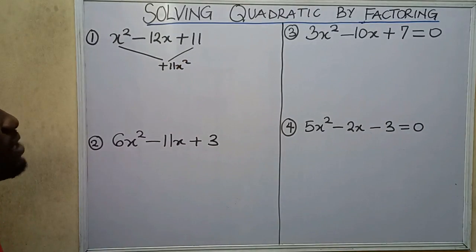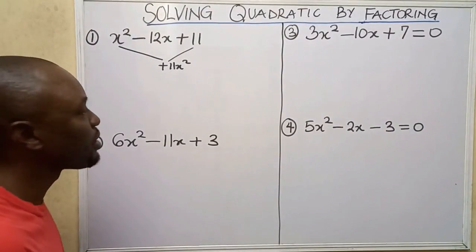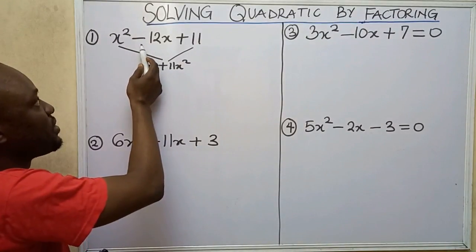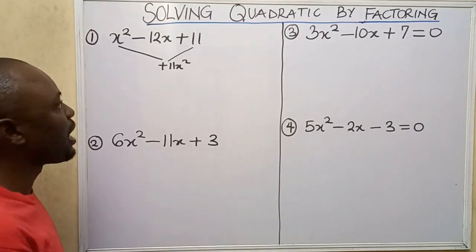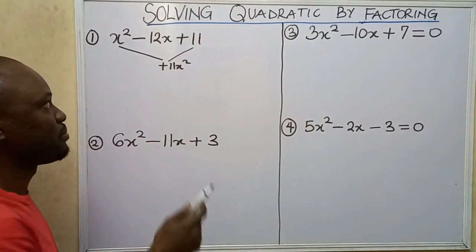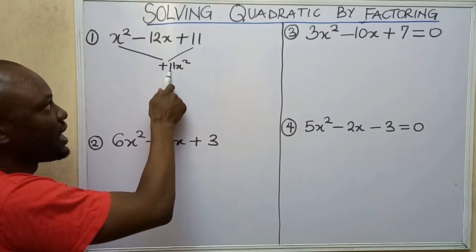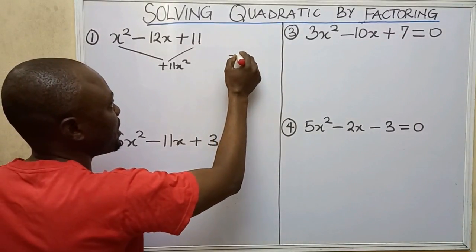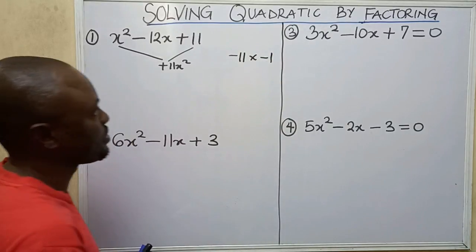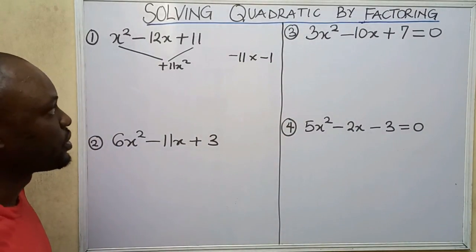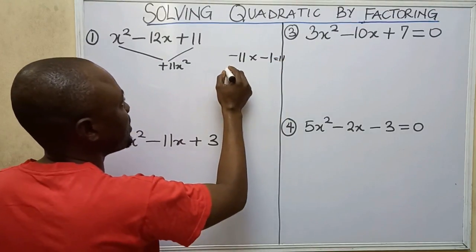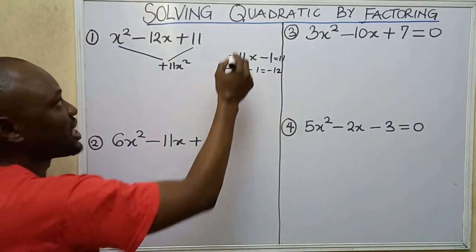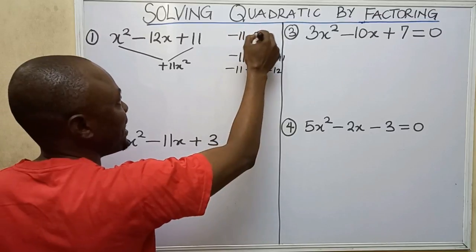The next thing to do is find two factors such that when I multiply those factors I get plus 11, and if I add or subtract those same factors I get negative 12. My factors are minus 11 and minus 1, because minus 11 times minus 1 gives me 11, and minus 11 minus 1 gives me minus 12.